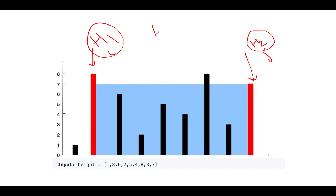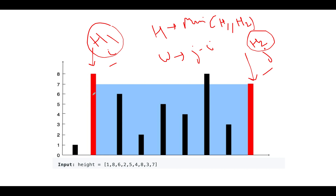We've decided the height is min(h1, h2). The width is given by j minus i, and the area is h × w. Applying this to the example: the height at one position is 8 and at the other is 7, the width is 8 minus 1 = 7, and the minimum height of 8 and 7 is 7. So the area is 7 × 7 = 49, confirming our formula is correct.